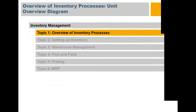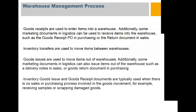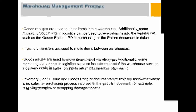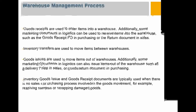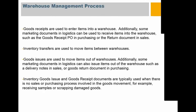We're going to start with the overview of the inventory process. Goods receipts are used to enter items into the warehouse. Additionally, some marketing documents in logistics can be used to receive items into the warehouse, such as the goods receipt PO in purchasing or the return document in sales. Inventory goods issues and goods receipt documents are typically used when there's no sale or purchasing process involved in the goods movements — for example, receiving samples or scrapping damaged goods.